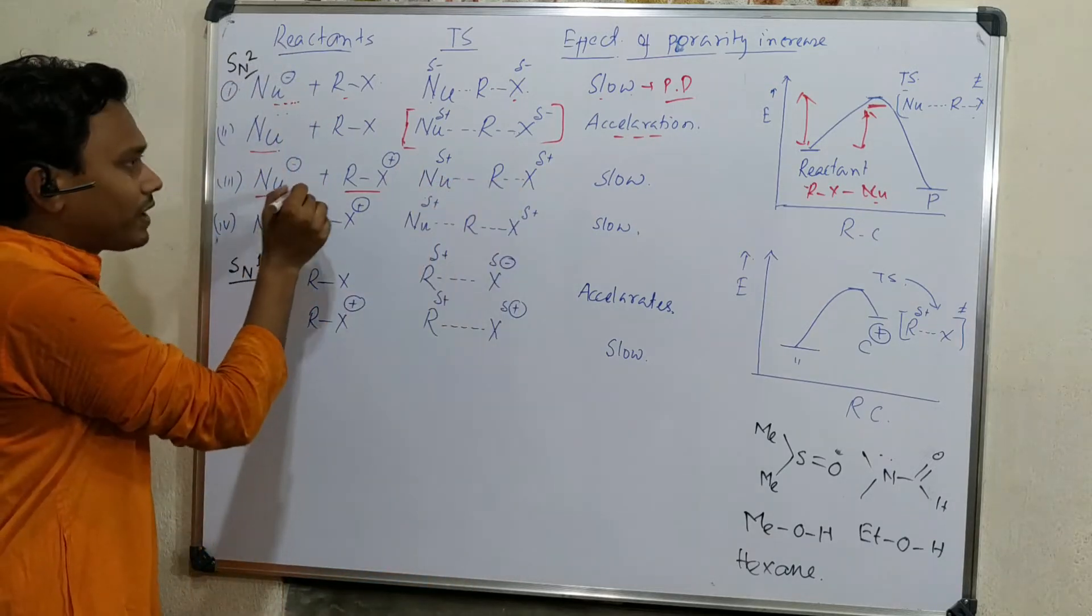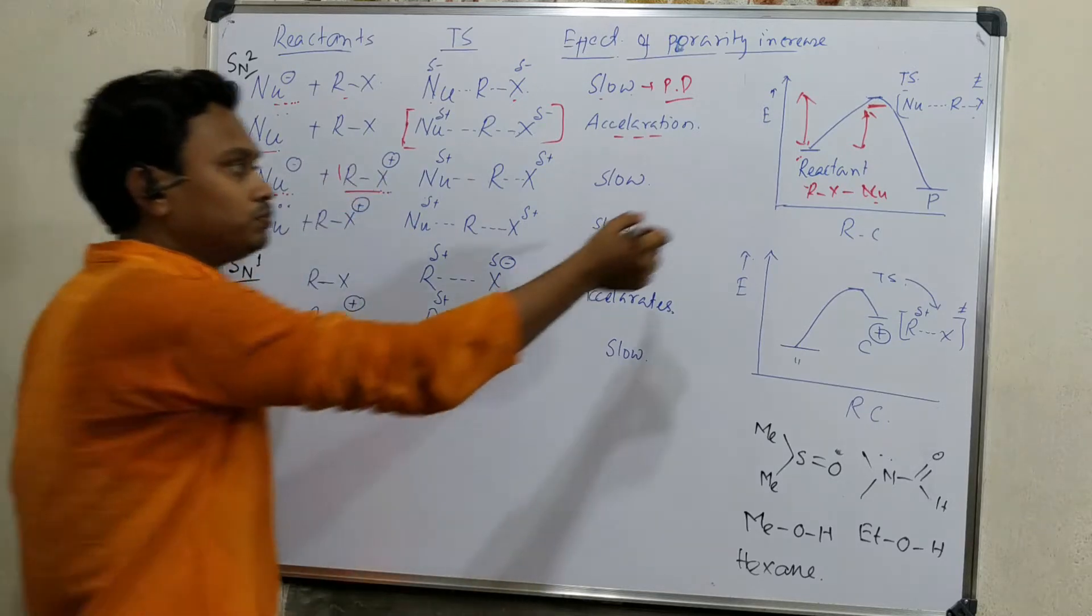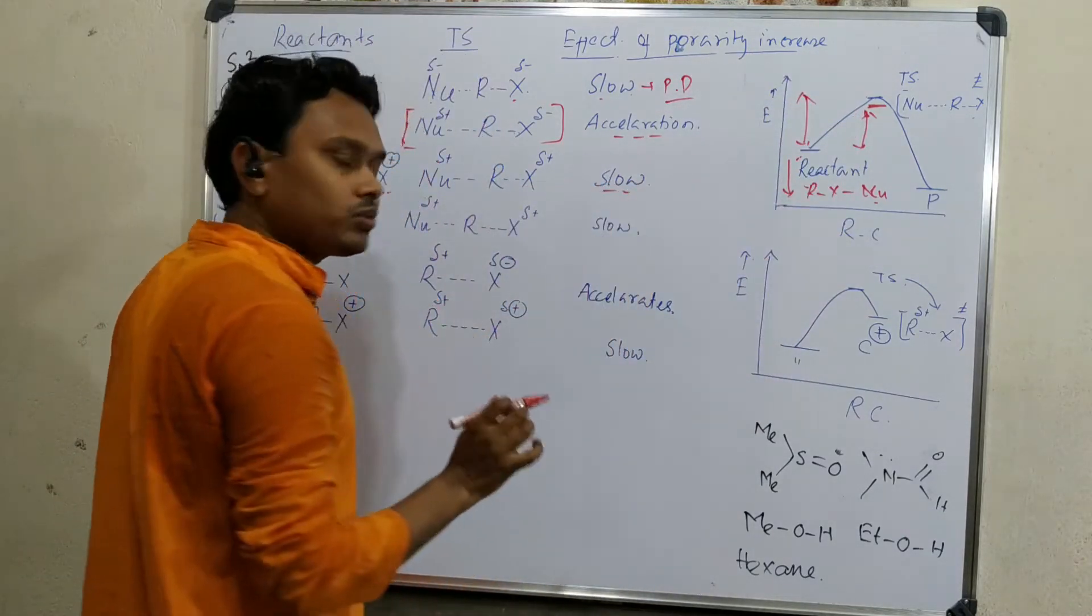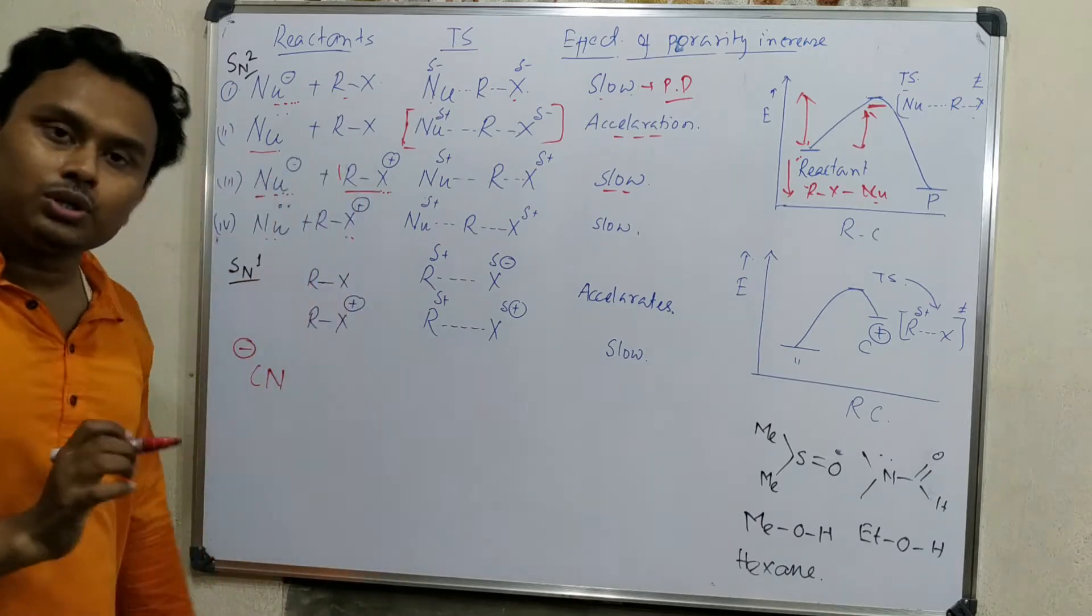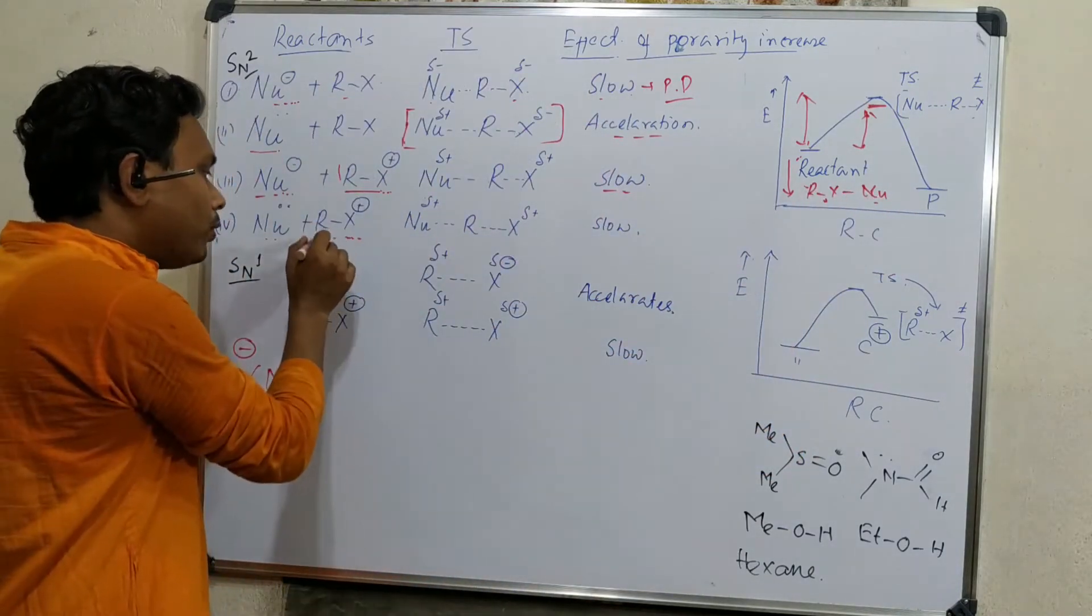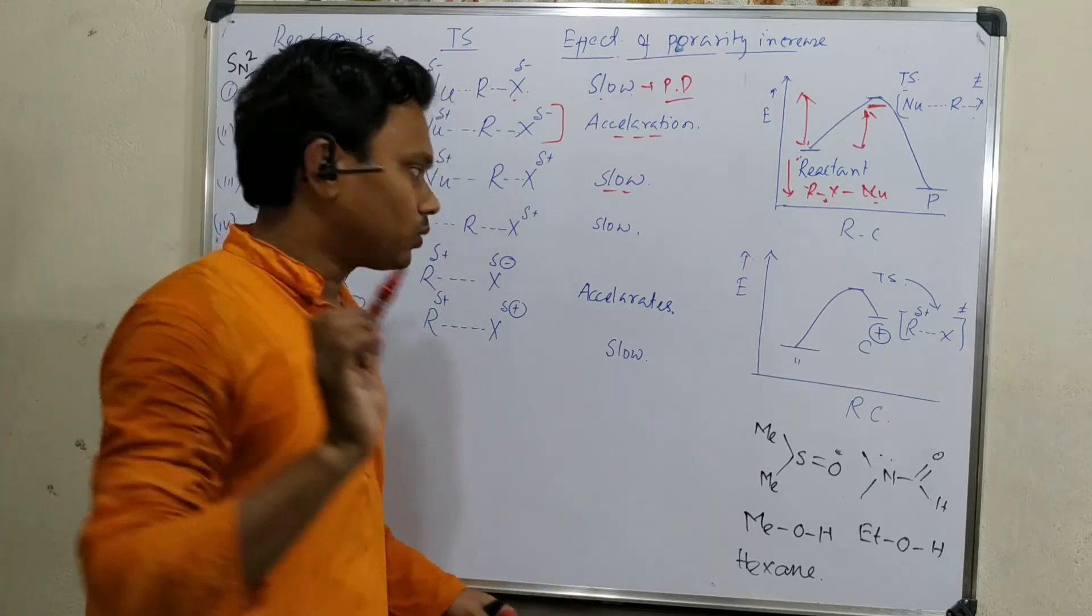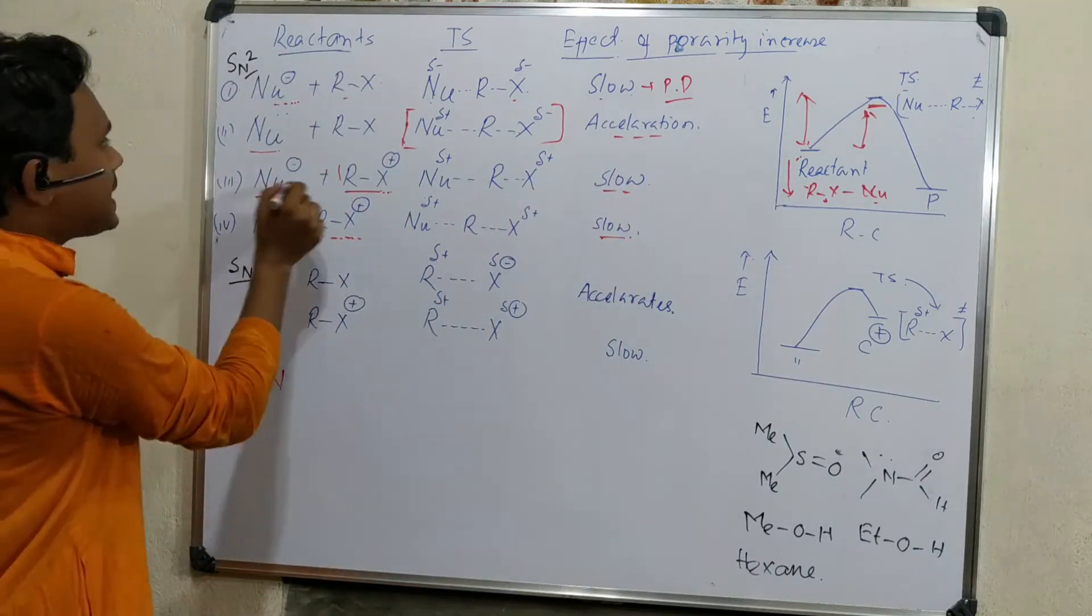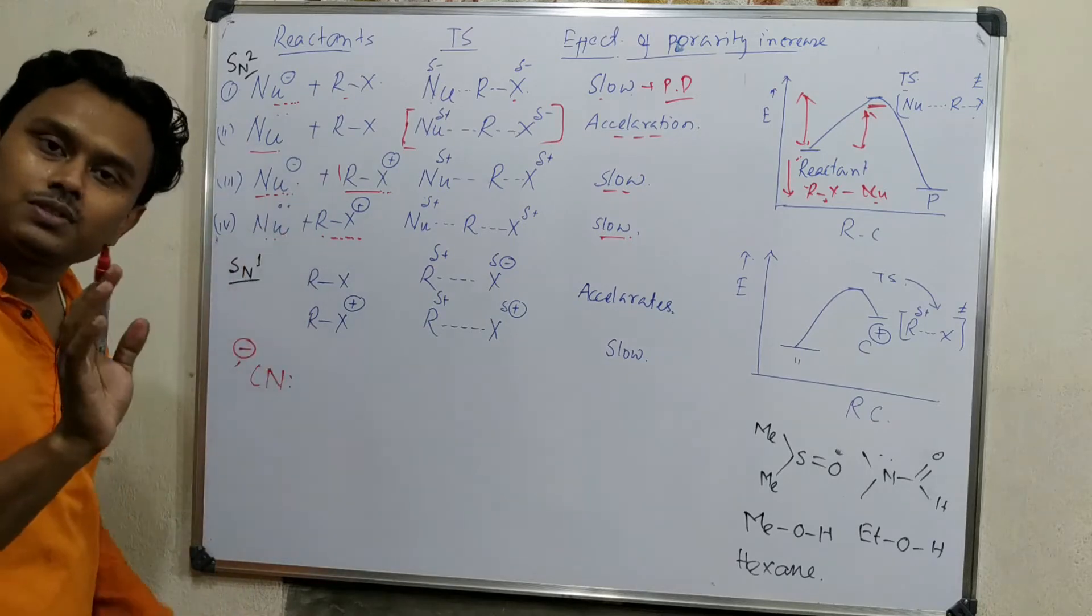Why? Because this nucleophile's energy is decreased due to the solvation. First point. Second point, the reactant is also solvated. So both reactant and nucleophile energy reduced. So overall energy of activation increased. So that's why reaction becomes slow. Second point, when the nucleophile is neutral but this is cationic then also it will be slow. Because previously there are two factors, alkyl halide as well as nucleophile both were solvated.